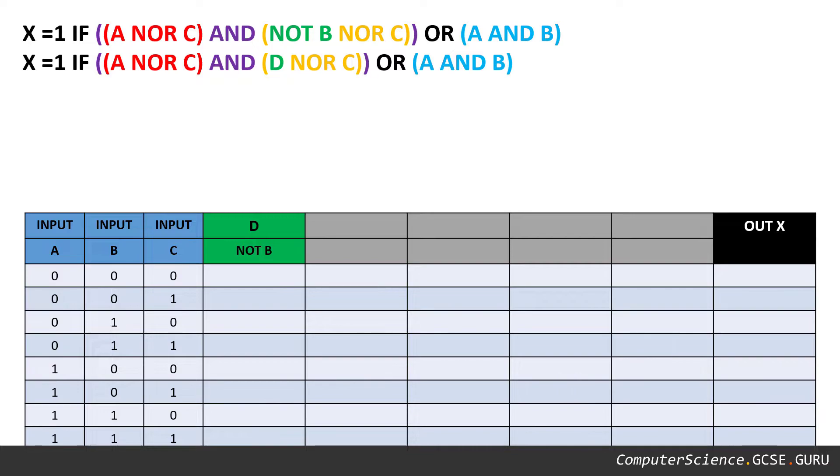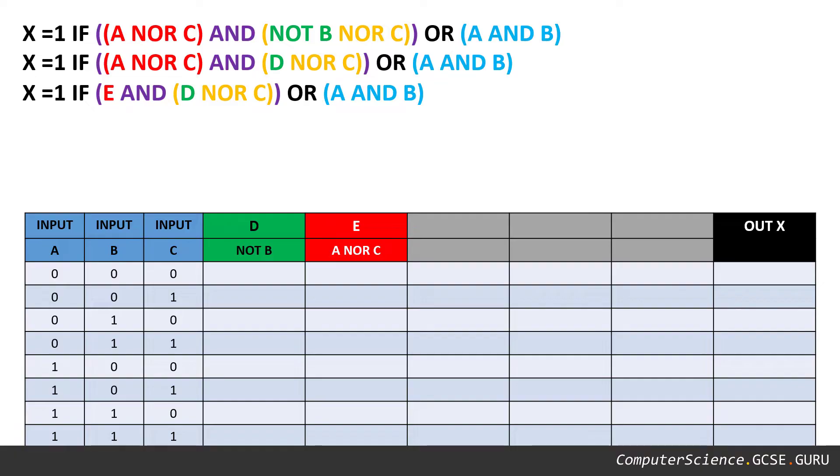We can see that red set of brackets, A nor C, is the next problem that would need to be sorted out. So we can drag that down into the truth table and we'll call that E. So E is A nor C, and I've replaced that in the expression with an E. The next thing we'll do is we'll look at that orange yellow mini problem, D nor C. We'll bring that down into the truth table. And we've simplified the expression even further there now.